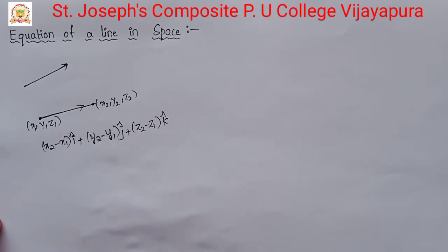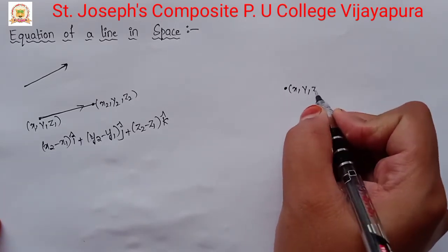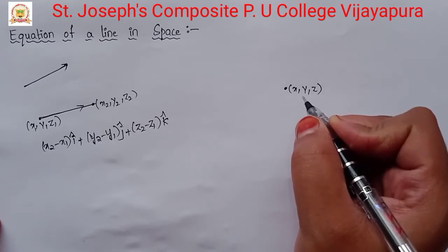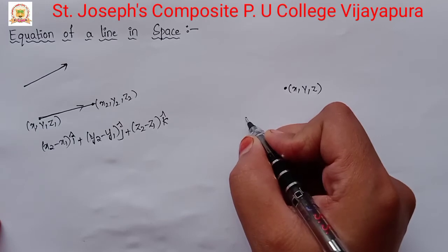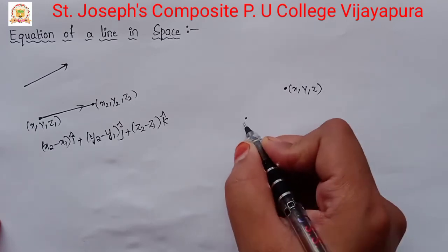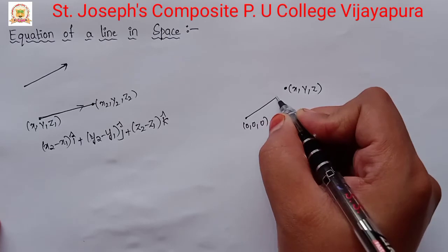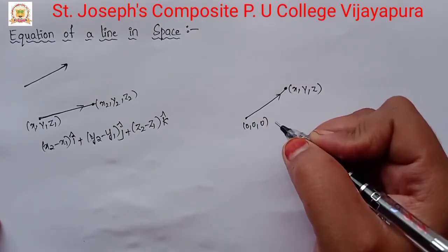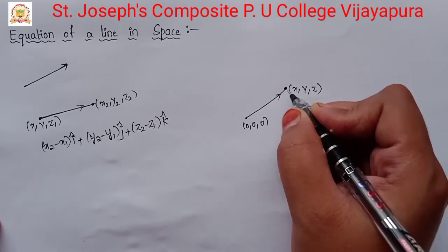Also, suppose you have one point x, y, z. How to represent this point in vector form? Take the origin 0, 0, 0 and join it with the point x, y, z. Now we can find the vector representation of this point.